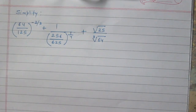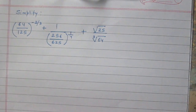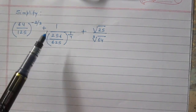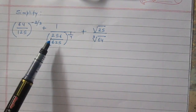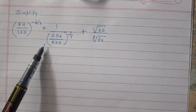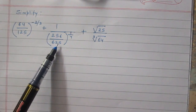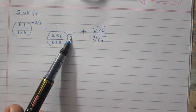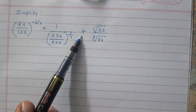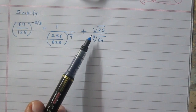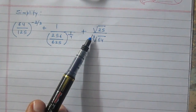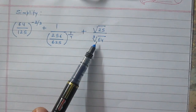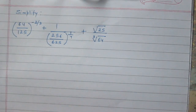Simplify 64 divided by 125 raised to the power minus 2 by 3, plus reciprocal of 256 divided by 625 raised to the power 1 by 4, plus square root of 25 divided by cube root of 64.